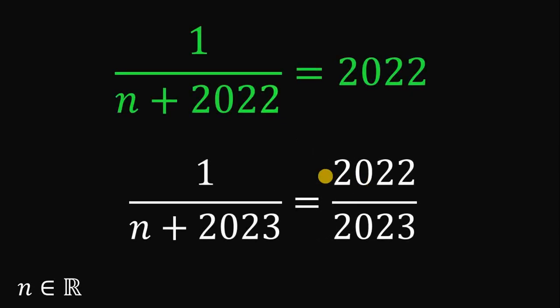Therefore, our answer to this question, given that 1 over N plus 2022 equals 2022, then the value of 1 over N plus 2023 equals 2022 over 2023. And as always, we are done.